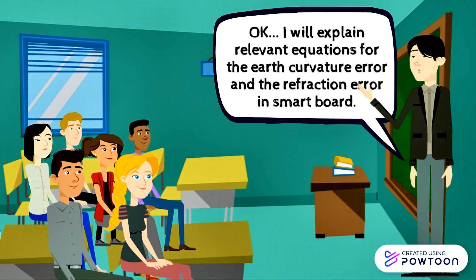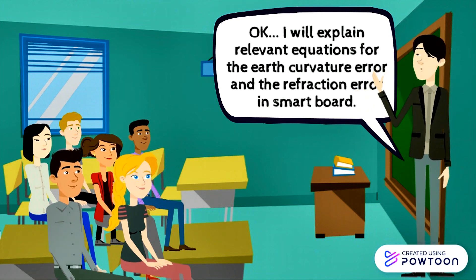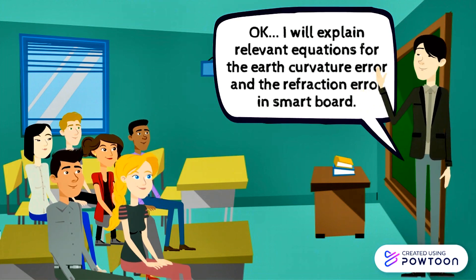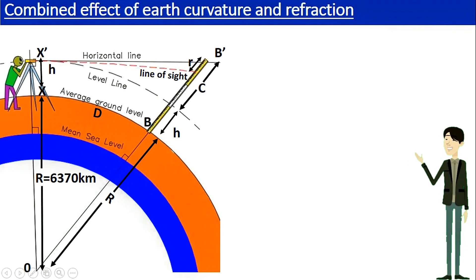Ok I will explain relevant equations for the earth curvature error and the refraction error in smart board. As you see in this figure the line of sight is supposed to follow the horizontal line. But due to refraction it doesn't follow the horizontal line. Therefore it lies between the level line and the horizontal line.